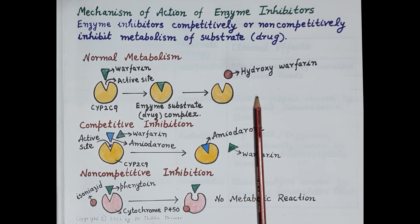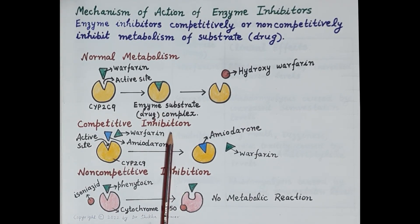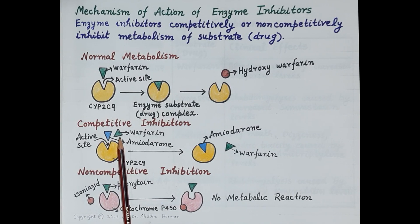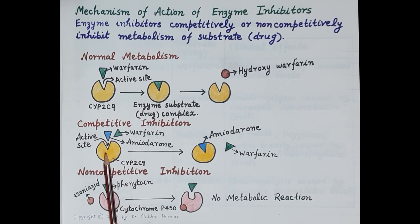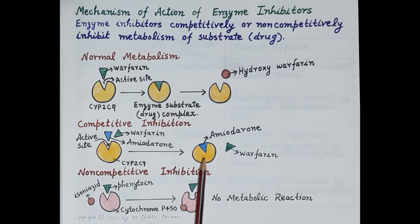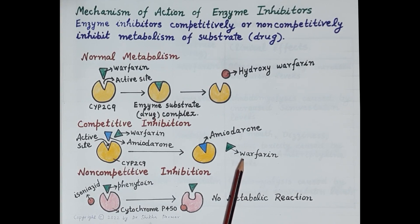Now let's understand competitive inhibition. Here the enzyme is cytochrome P450 2C9 and the substrate is warfarin, but warfarin is administered along with amiodarone. Amiodarone is a competitive inhibitor — it has a structure similar to warfarin and a higher affinity for the cytochrome P450 enzyme. So amiodarone competes with warfarin to bind to the active site. Instead of warfarin, amiodarone binds to cytochrome P450 2C9, and because of this, metabolism of warfarin is prevented, resulting in accumulation of warfarin in the body.